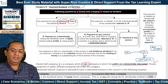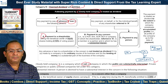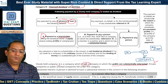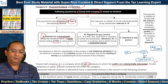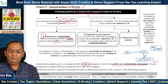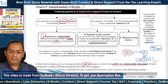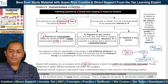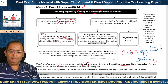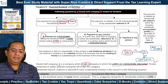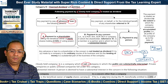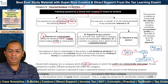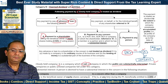If a closely held company gives a loan or advance to a shareholder who is the beneficial owner of equity shares holding 10% or more of voting power in the company, the payment of loan or advance will be treated as deemed dividend under Section 2(22)(e) in the hands of such shareholder.